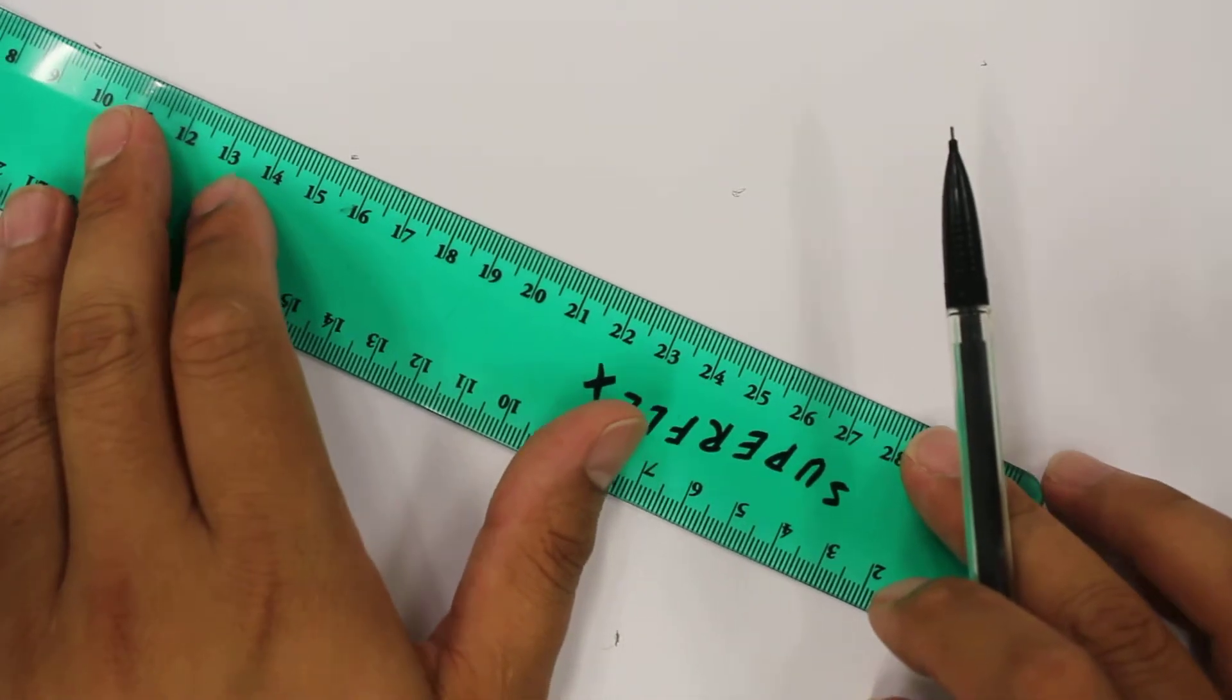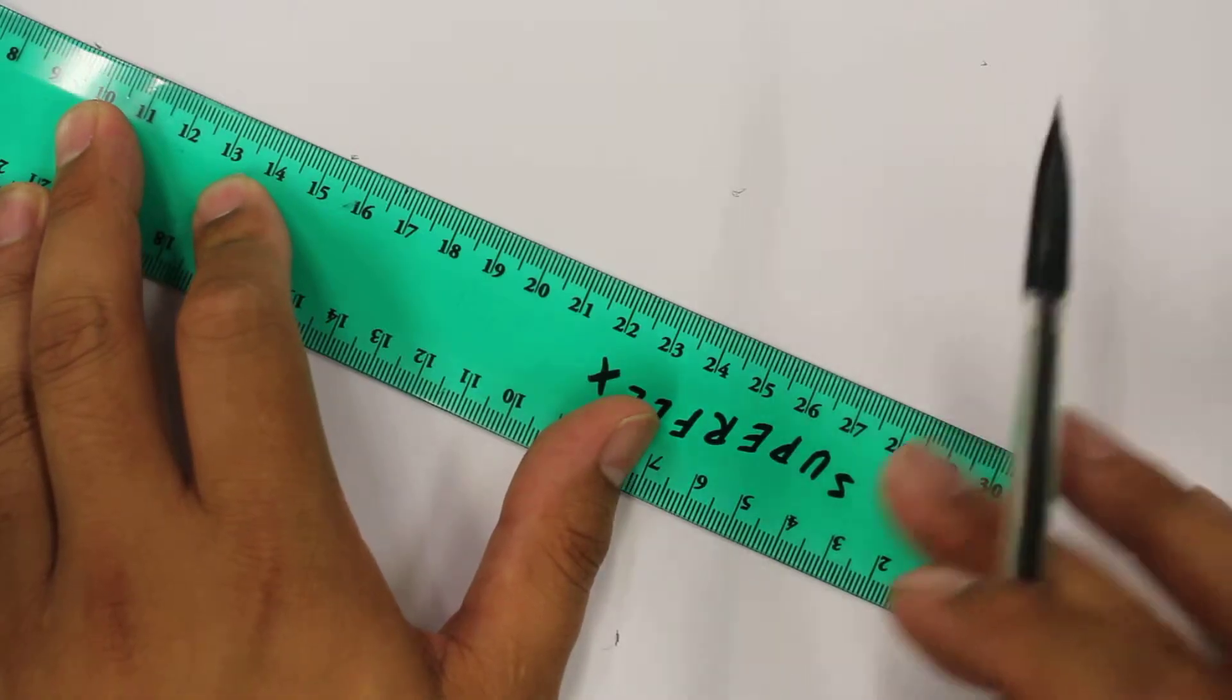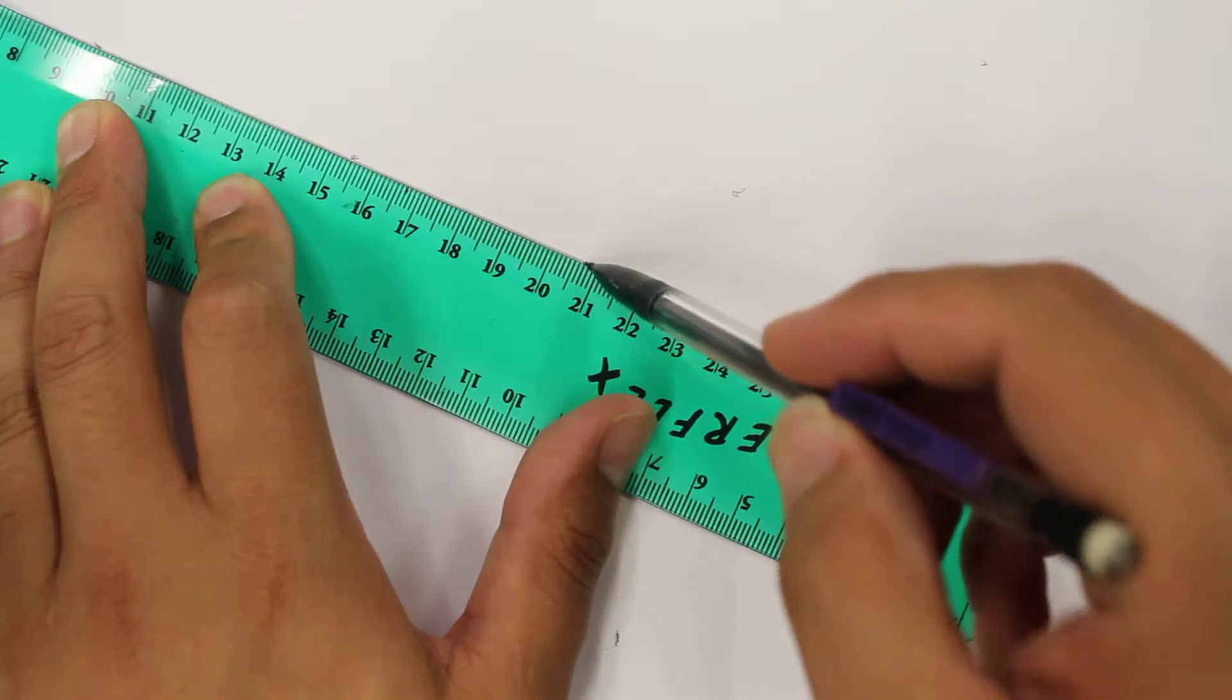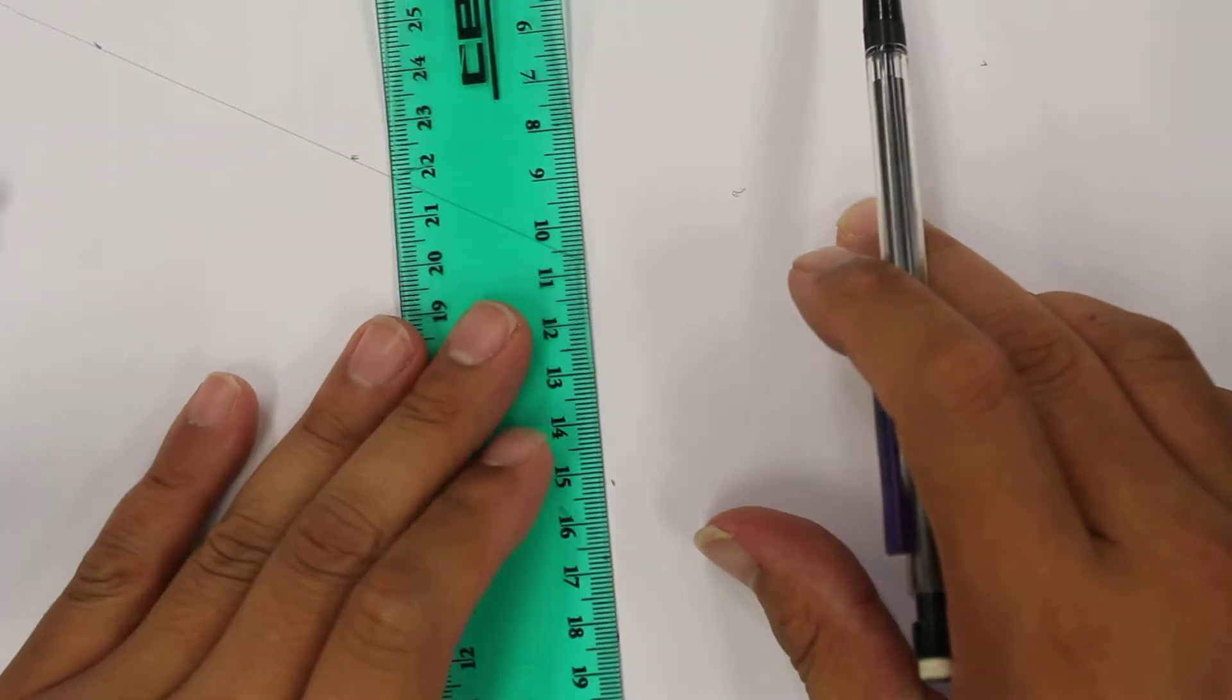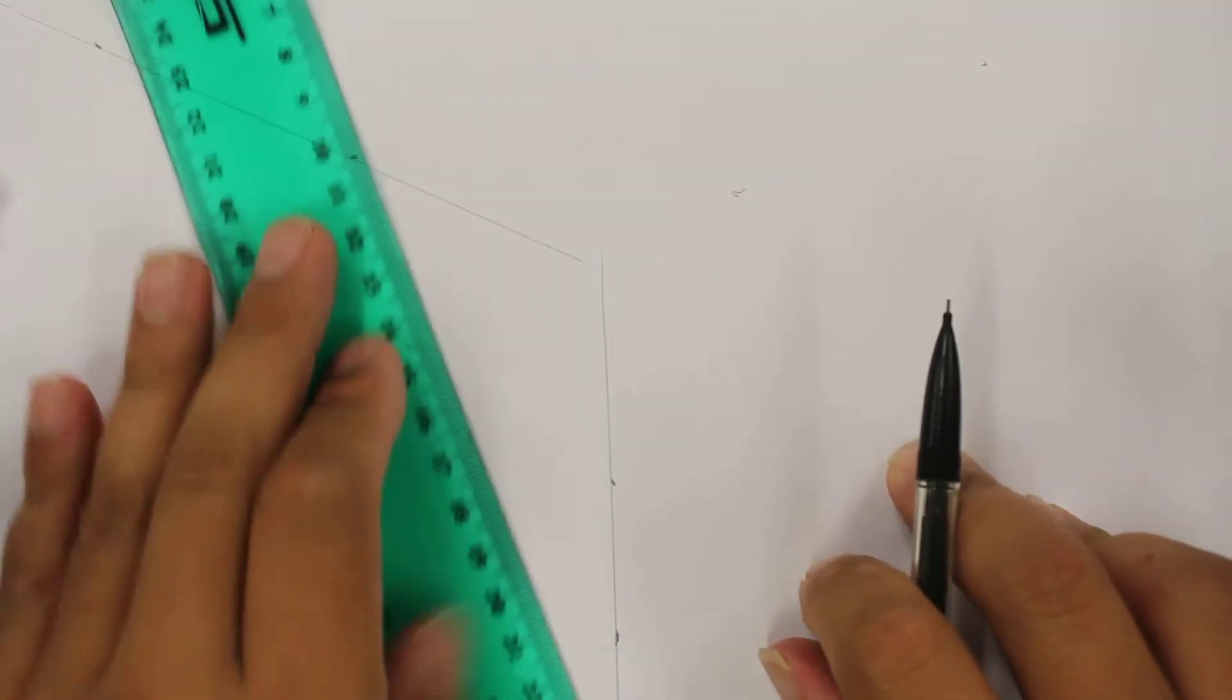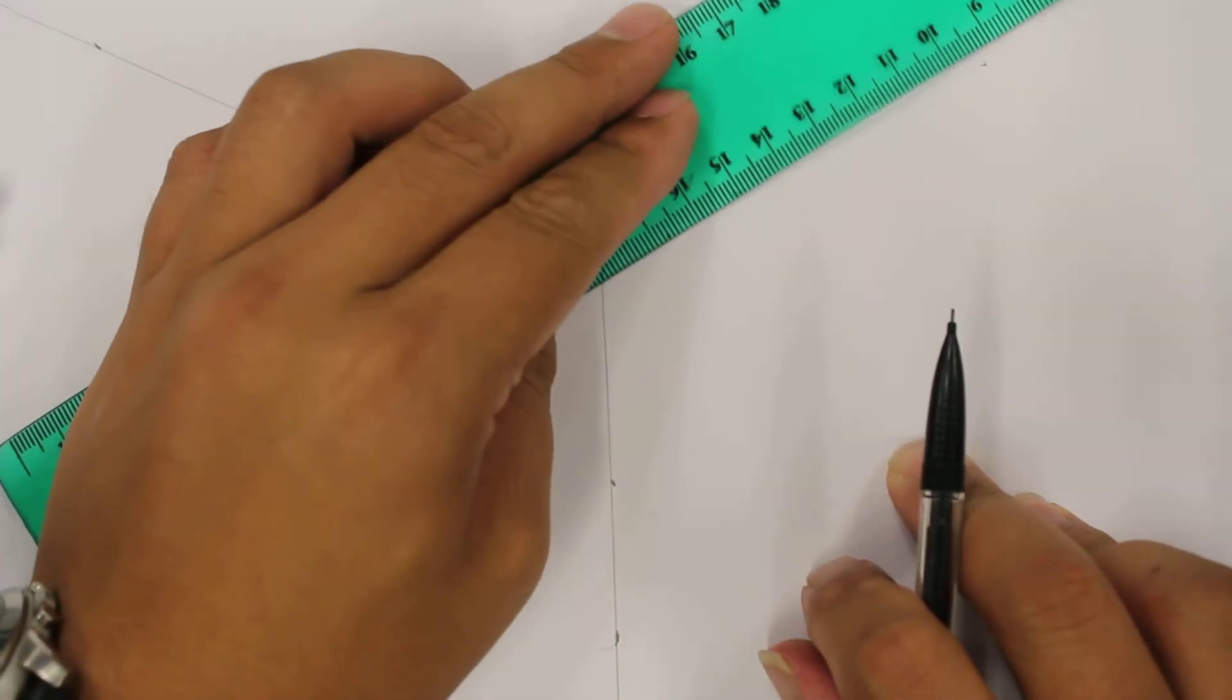So first I will create a free body diagram and what that is is we'll just connect these little dots with lines.